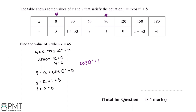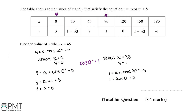Now we do the same for x equals 90 and y equals 1: 1 equals a multiplied by cos 90 plus b. You're expected to know that cos 90 equals 0, so 1 equals a multiplied by 0 plus b. Since a multiplied by 0 is 0, we can work out that b equals 1.